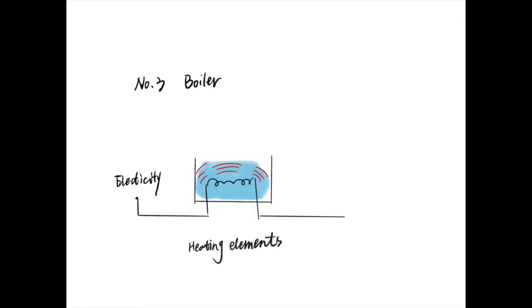Electricity is run through a heating element that acts as a resistor to create heat through resistance. These boilers are often either on or off, so the water temperature can be very inconsistent.